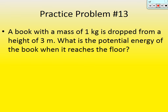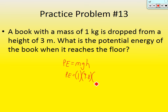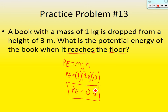Practice problem 13: a book with a mass of 1 kg is dropped from a height of 3 meters. What is the potential energy when it reaches the floor? PE = mgh = 1 × 9.8 × height. When it reaches the floor, height is zero, so potential energy is zero. An object on the ground has no gravitational potential energy.